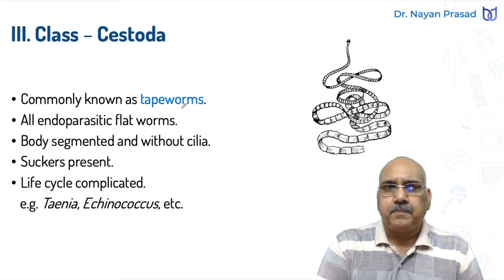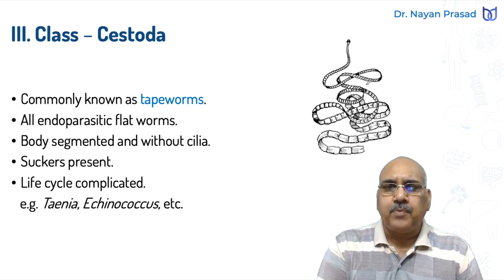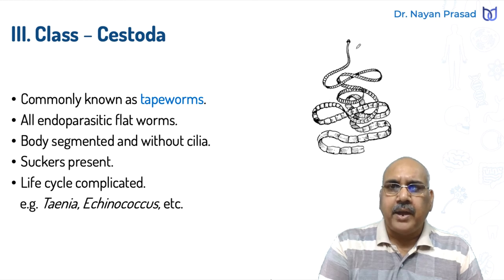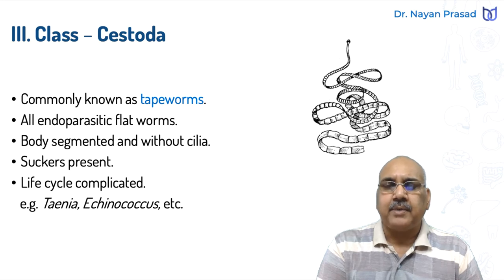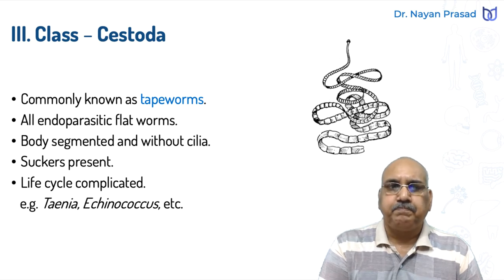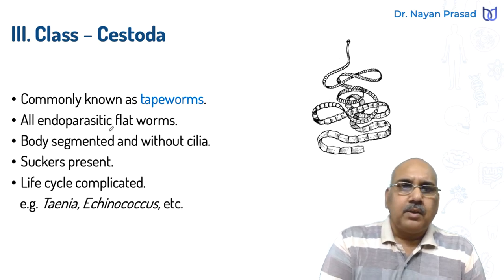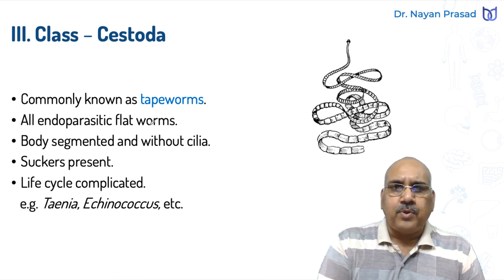Now let us see class Cestoda. Members of class Cestoda are commonly called tapeworms. The examples include Taenia solium or Taenia saginata, commonly called tapeworms. If you remember, hooks and suckers are present in tapeworms.